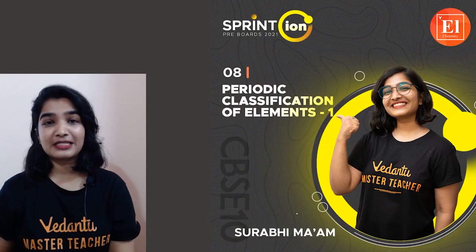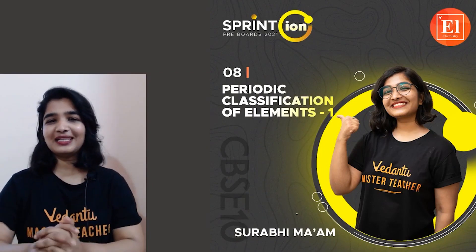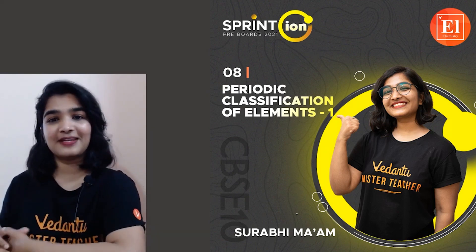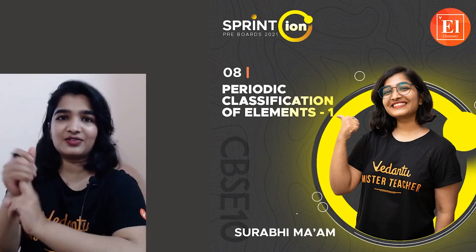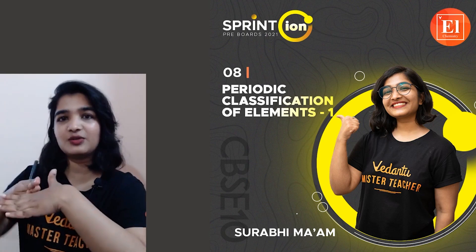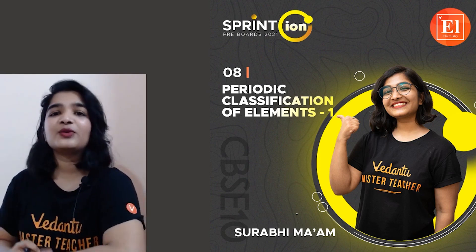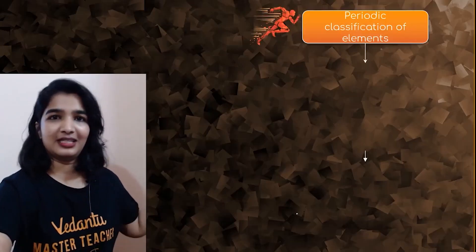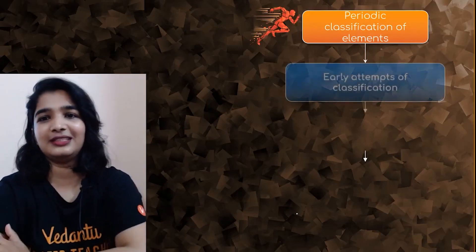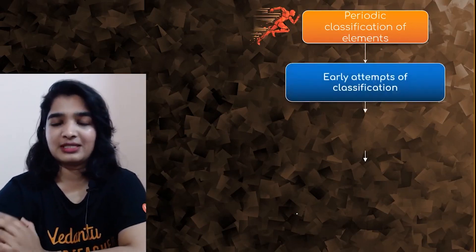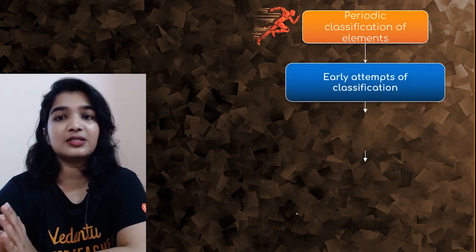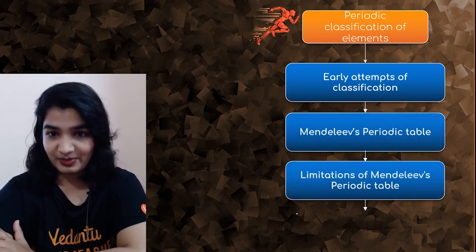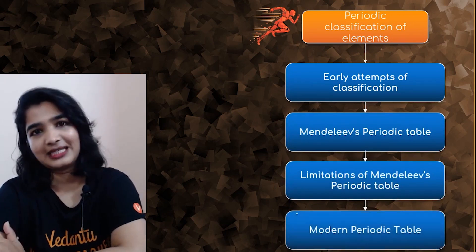Hello, namaste! This is Surabhi, your master teacher of chemistry at Unacademy, and welcome to the Sprint Ion series. We are in the last chapter — Periodic Classification of Elements. We have divided this chapter into two sessions, one today and one tomorrow, so we can discuss more questions. The topics we will be focusing on in this session are: early attempts of classification, Mendeleev's periodic table, limitations of Mendeleev's periodic table, and the modern periodic table.